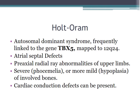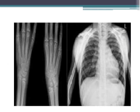Holt-Oram is an autosomal dominant syndrome linked to the gene TBX5. You can see preaxial radial ray abnormalities of the upper limbs, ranging from severe focomelia to mild hypoplasia, and cardiac conduction defects are often present. The associated chest x-ray demonstrates typical ASD findings: prominent right heart and increased lung vasculature.